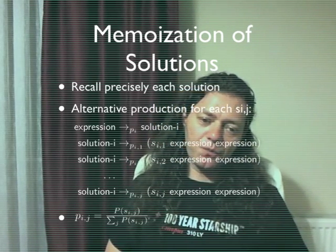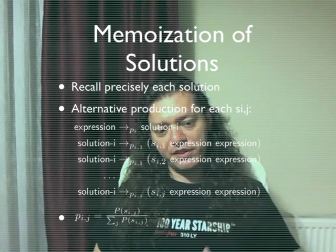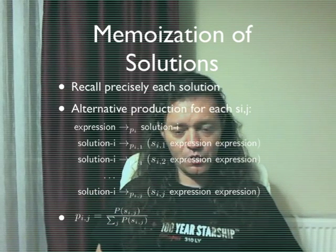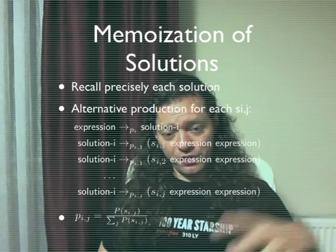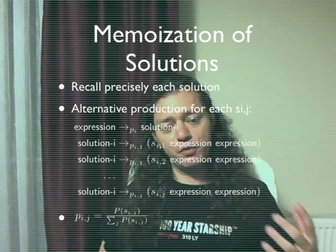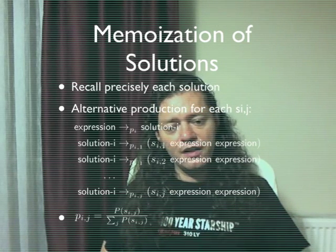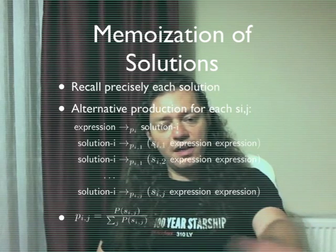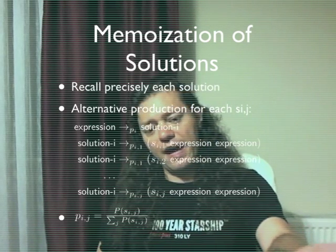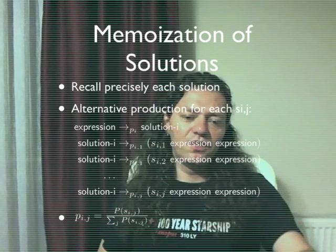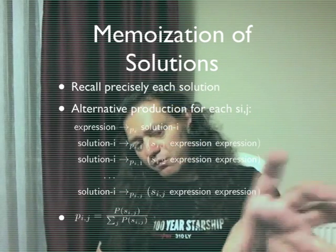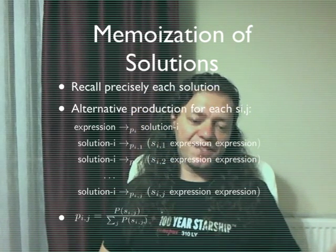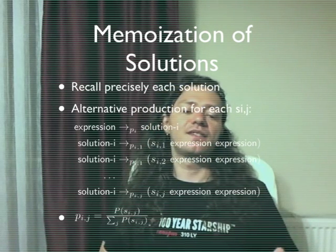Memorization of solutions. This algorithm helps us recall precisely each solution — we don't want to forget them, we want to remember as much as possible. We add an alternative production for each SIJ program. In a list-like language, you can just add an alternative head, and using that head you can factor into particular rules for each solution program. The probability is calculated by weighting using the prior probabilities of the solutions.